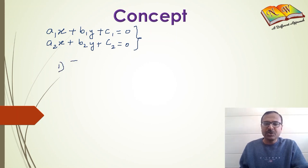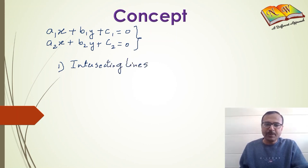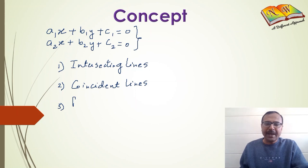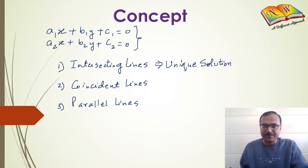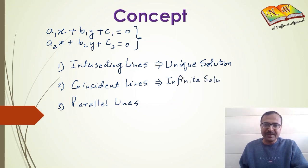There are three cases. One, you may obtain intersecting lines — that means the two lines will intersect at a single point. Two, you might obtain coincident lines — that means the two lines may be overlapping each other. Three, you might obtain parallel lines — that means the two lines will not intersect each other at any point. When you obtain intersecting lines, the system of equations has a unique solution — that means it will have one particular solution and only one solution. Coincident lines means the system of equations will have infinite solutions; every solution of the first equation will also be the solution of the second equation.